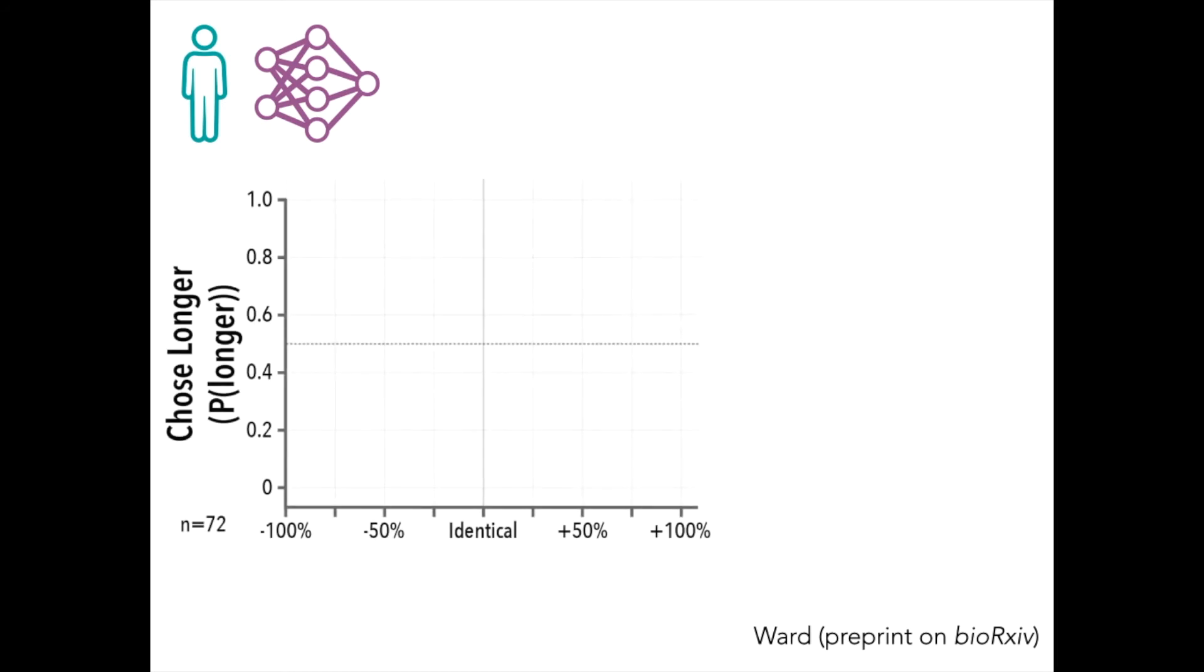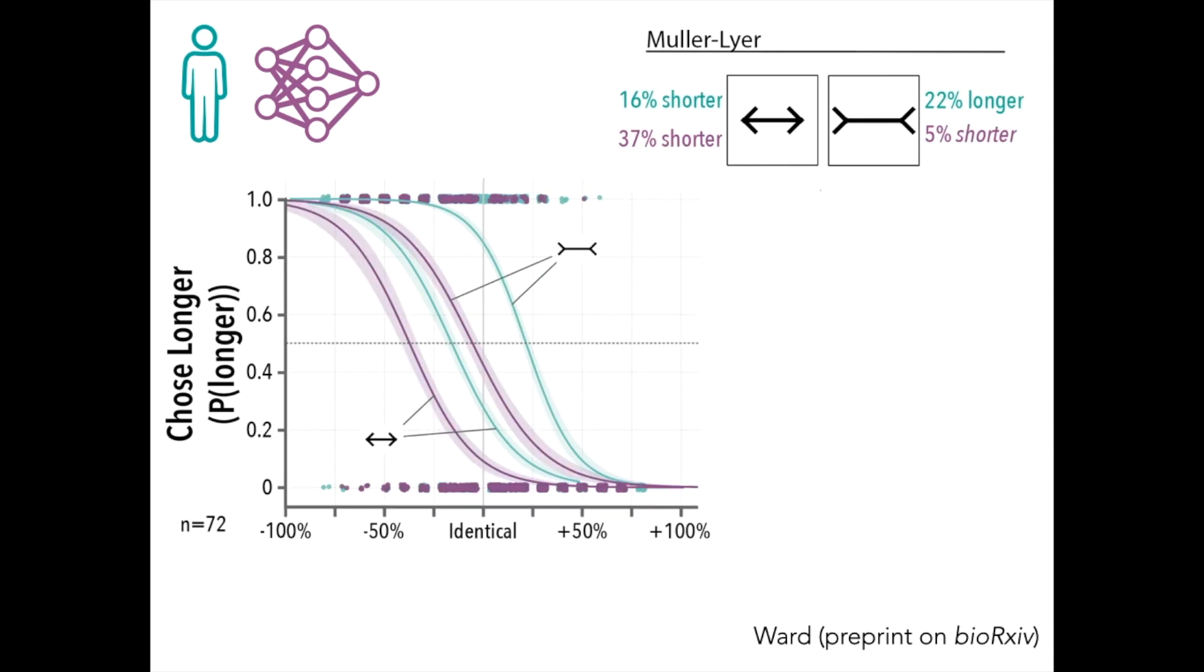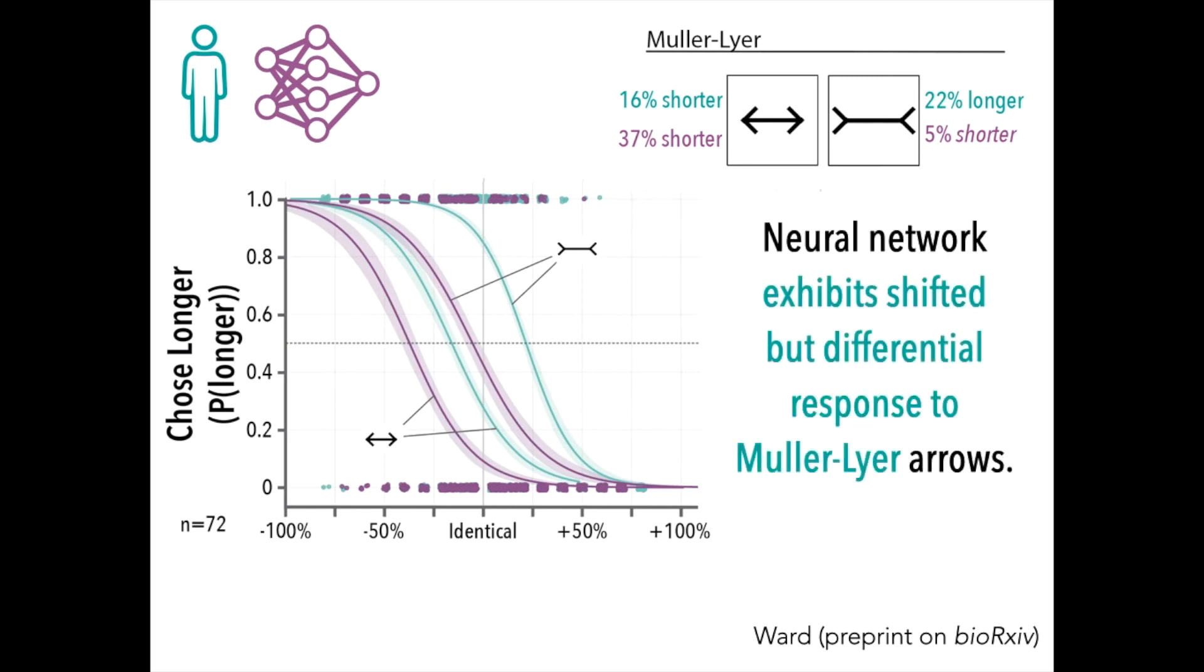So for both humans and networks, we can find the magnitude of these illusions. Using this analytic approach, I can now show actual data for humans and deep neural networks. Because Mueller-Lyer has two versions, there's going to be two curves here initially, for just humans. When the line appears longer than it actually is, humans indeed continue to choose longer. When it appears shorter, they choose the shorter ones faster. So there's a differential response between these on either side of that identical line. Neural networks also show this same differential response, where they continue to choose the longer one when they are shown the longer illusion, compared to when they show the shorter illusion. Thus, neural networks exhibit this shifted but differential response to Mueller-Lyer arrows.